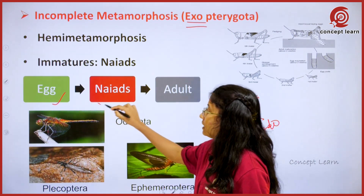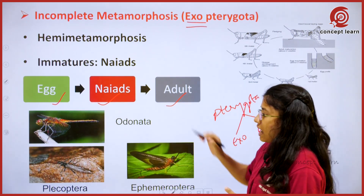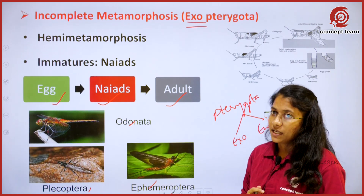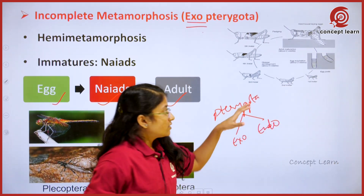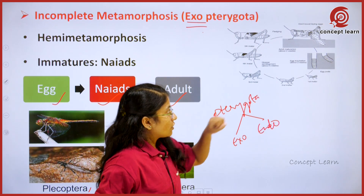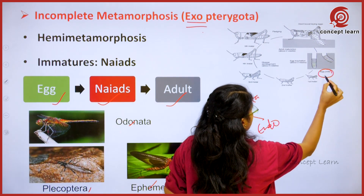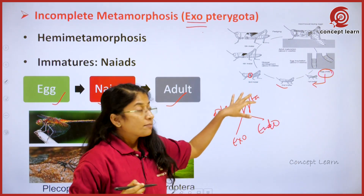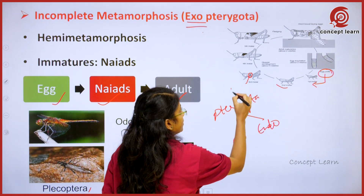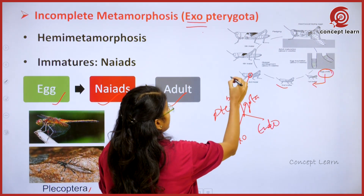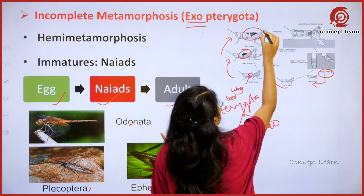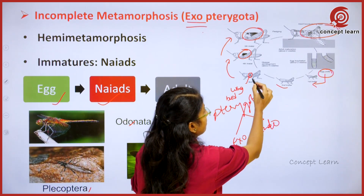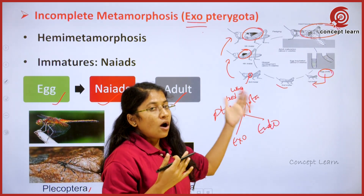Here, as you see, there are also only three stages: egg, naiads or nymphs, and the adult. Generally, members of the Odonata, Plecoptera, and Ephemeroptera come under this hemi-metamorphosis or Exopterygota. As you see here, focus on this diagram — eggs hatch into instars. In this path, these are known as wing buds, and as the insect increases in size, the wing bud size is also increased.